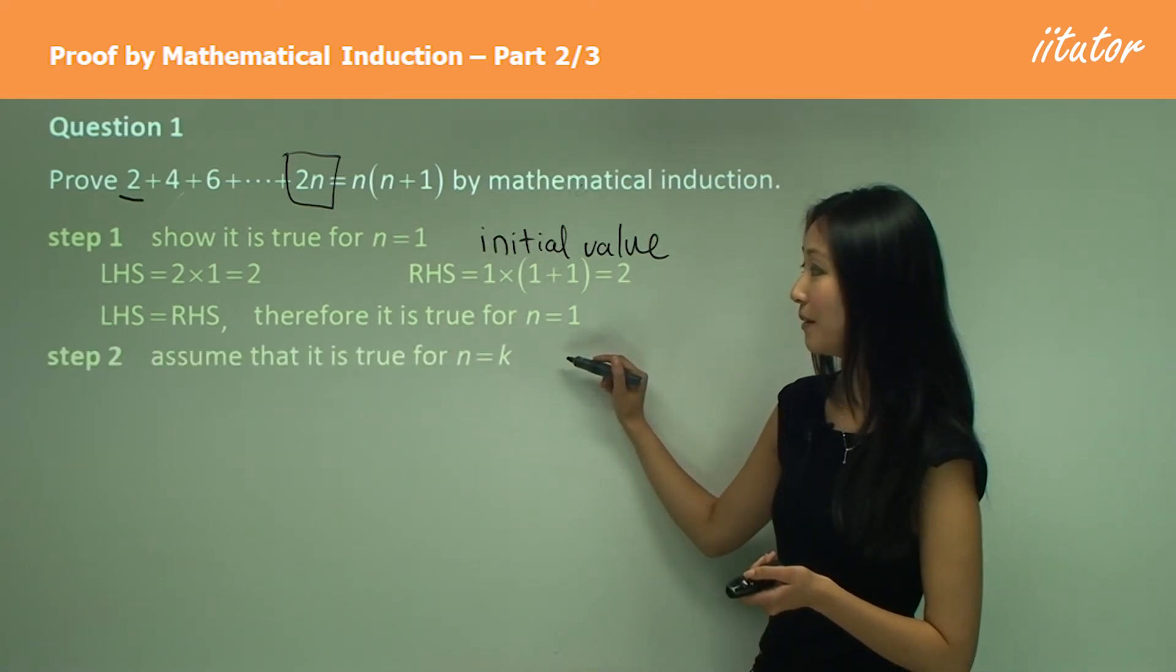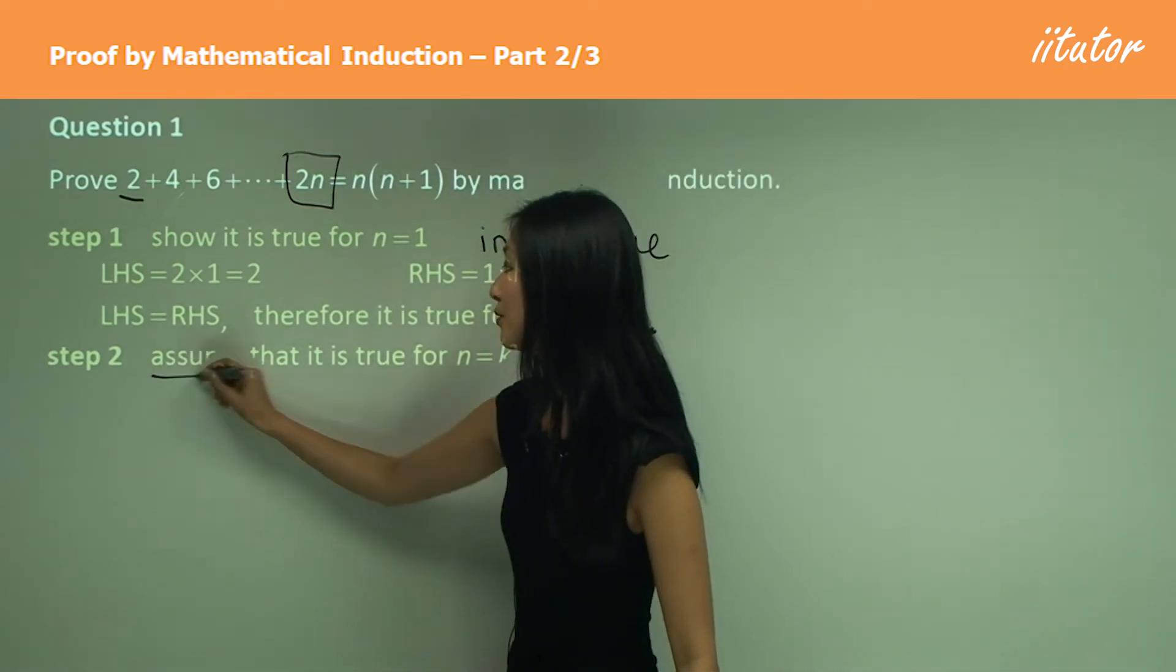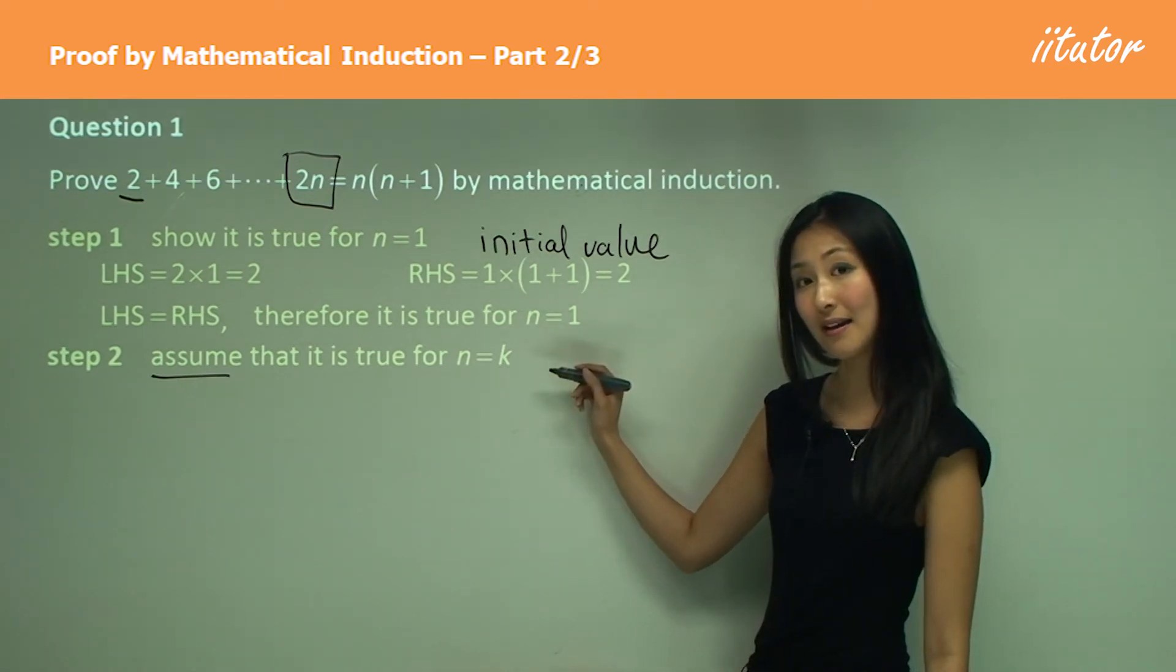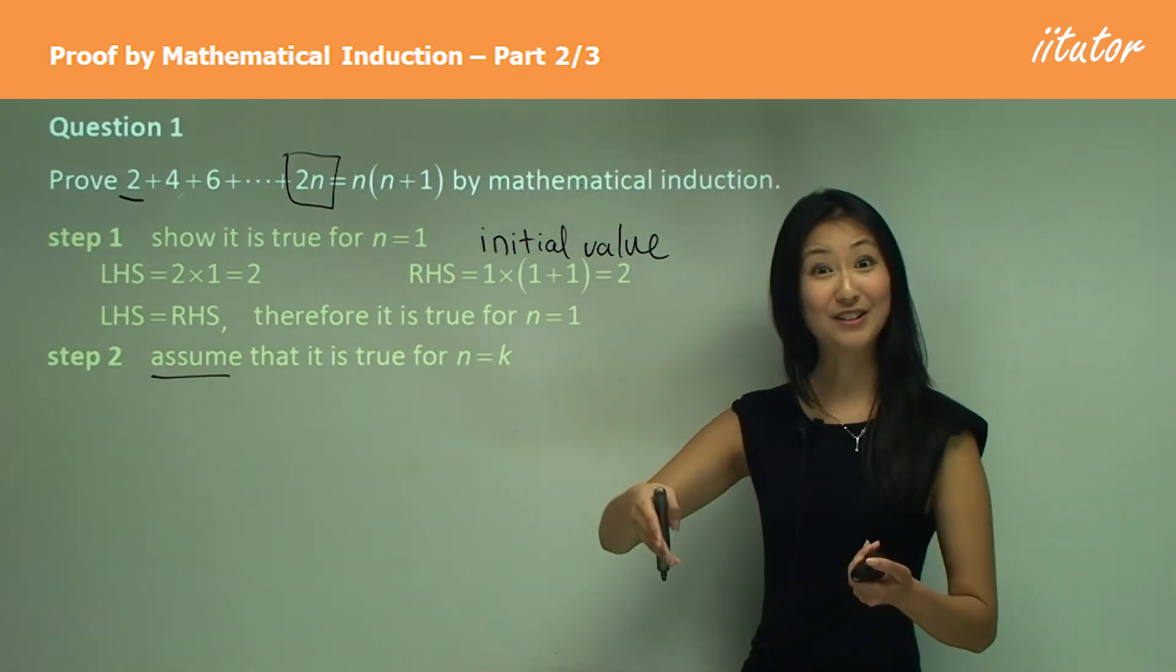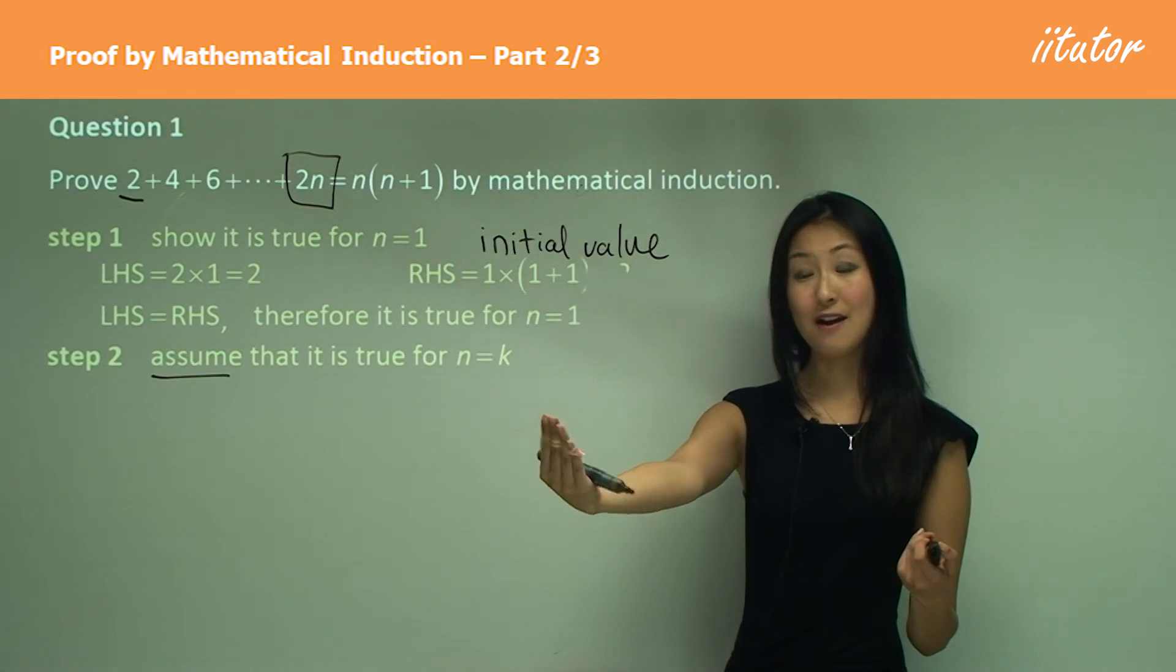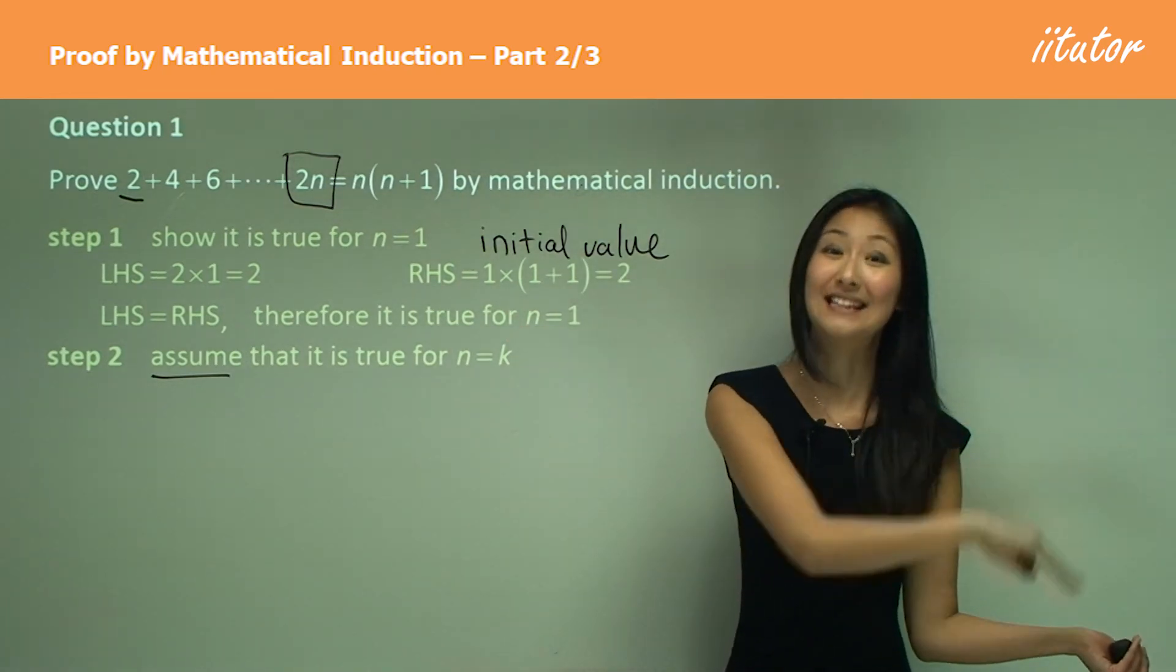Now we can move on to step 2, which is making the assumption. So assume that it is true for n equals k. Remember in terms of dominoes, that was when one of the dominoes makes the assumption that if the domino in front of me falls, then I will fall as well and hit the next domino.